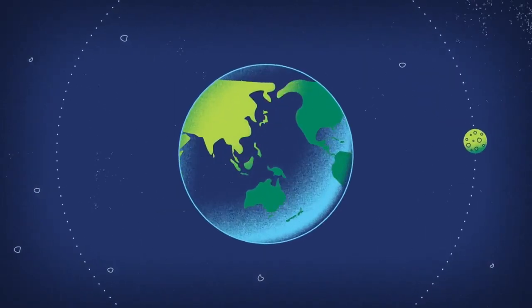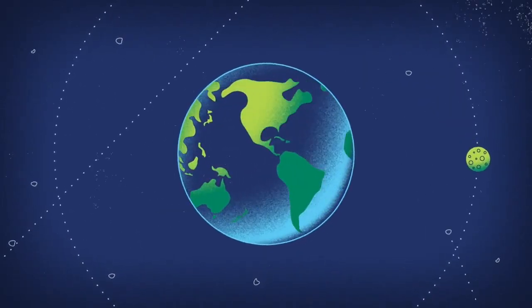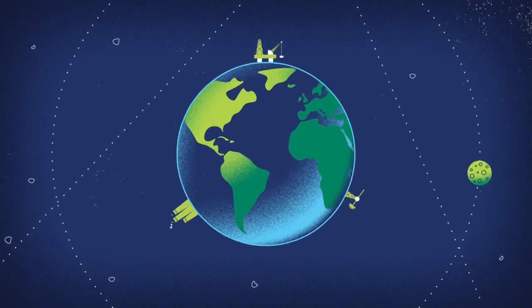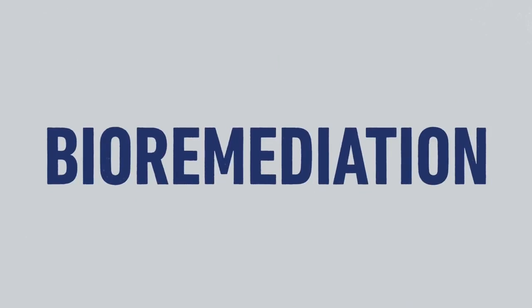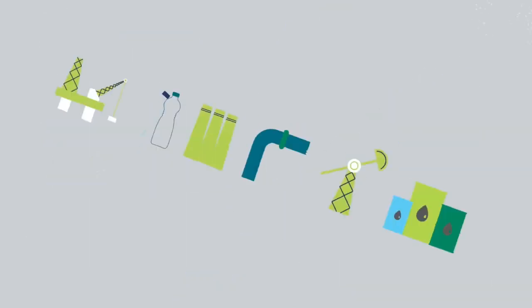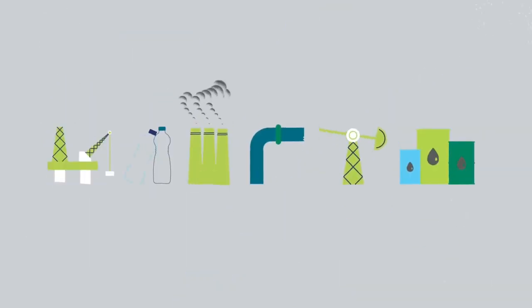Our Earth faces many problems. One of these is how to deal with the dangerous chemicals we produce. But microbes can help us. Bioremediation is the process of using microorganisms to remove or degrade pollutants from the environment.